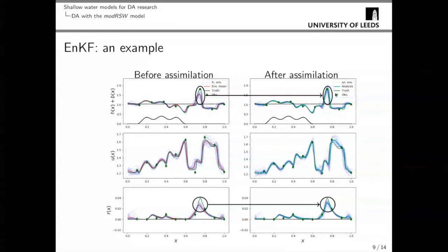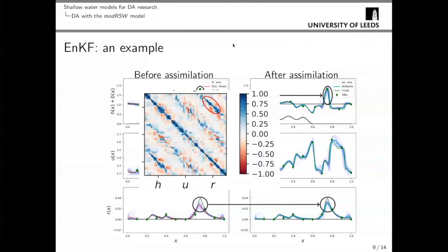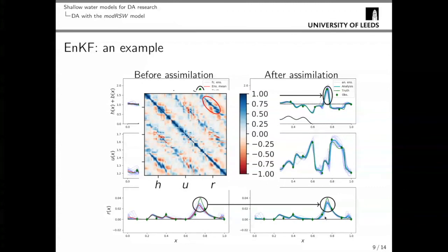For the rain variable r, there is no direct observation near the peak, but by looking at the normalized covariance matrix, we can see a high correlation between h and r shown as a band. This is how the ensemble Kalman filter works: by exploiting the covariance matrix Pf, even without a direct observation, the system can still improve the state of r, yielding an improved analysis even without a direct observation.